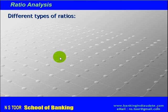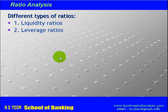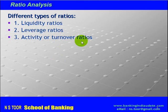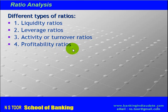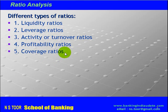There are different types or groups of ratios. One is liquidity ratios, two is leverage ratios, three is activity or turnover ratios, four is profitability ratios, and five is coverage ratios.